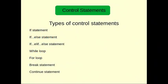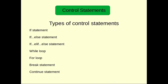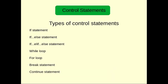In Python we have seven types of different control statements. The first one being the if statement, the second one the if-else statement, and the third one the if-elif-else statement, which is mainly the extended version of the second statement. We also have the while loop, for loop, break statement, and continue statement.